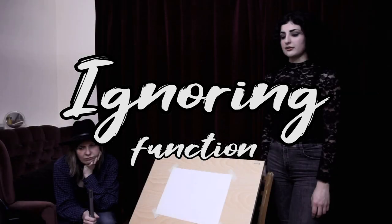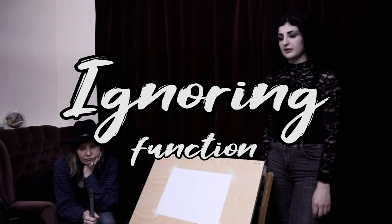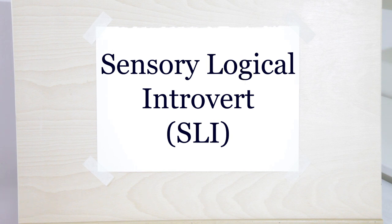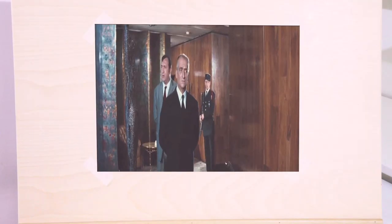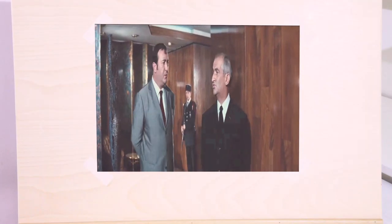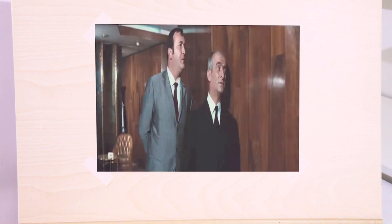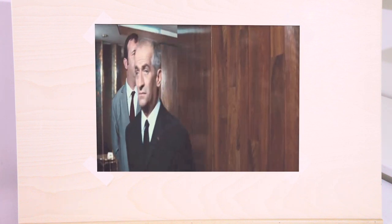The ignoring function is unvalued and strong — it doesn't inform the worldview. The ignoring function is perceived as something that is very easy to do, but inappropriate and primitive. Two types have SE as the ignoring function: sensory ethical introverts and sensory logical introverts. For the SEI, SE is perceived as a sort of tiring inconvenience, an irritating agitation that requires calming down. For SLIs as well, SE is seen as a nuisance — something completely unnecessary and unreasonable.